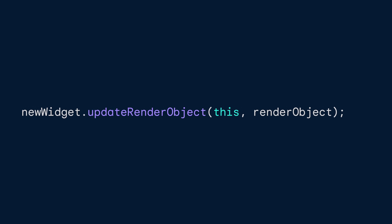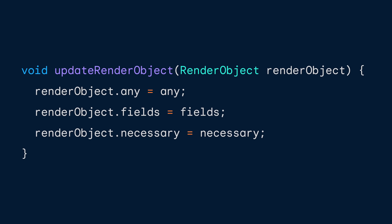Later on, when your widget tree rebuilds and provides a new render object widget, the element bridging the gap between the two takes that new render object widget and calls its updateRenderObject method. Here's an example implementation of updateRenderObject from within a render object widget. You can see that the widget updates mutable fields on the render object with the latest values, readying it for the next frame. Each of those attribute assignments are actually magic setters, the inner workings of which we'll explore soon.